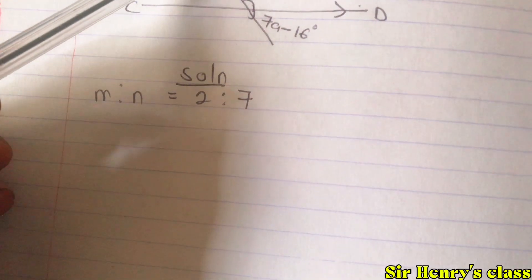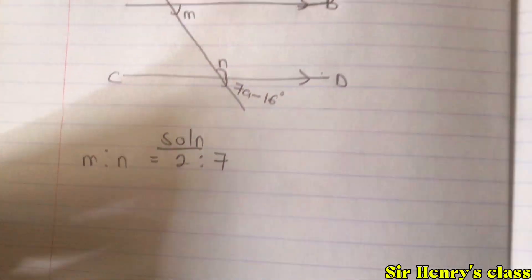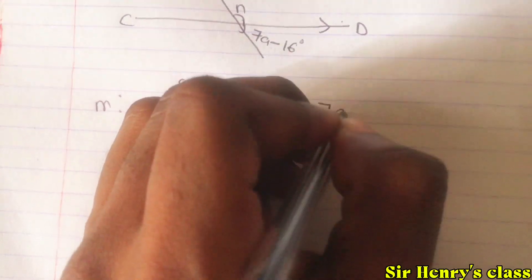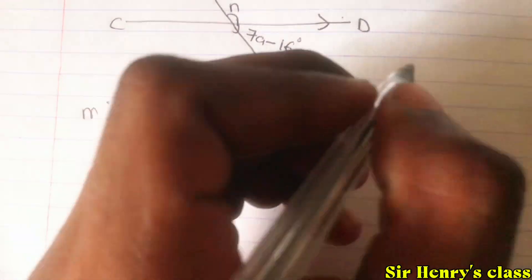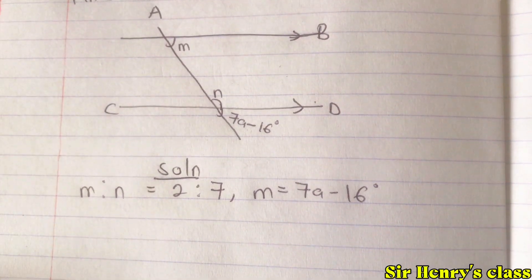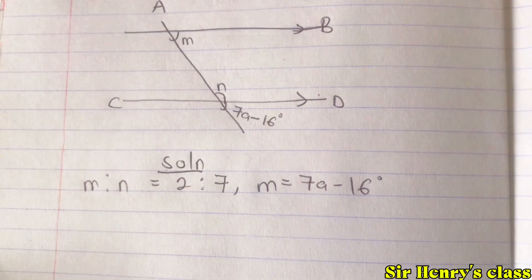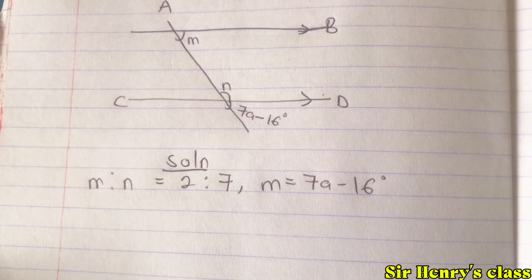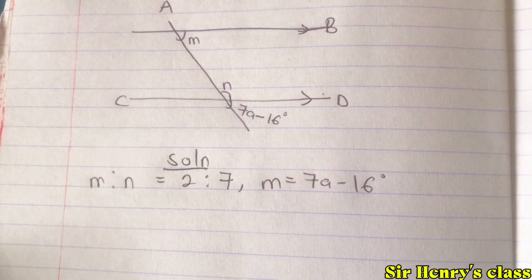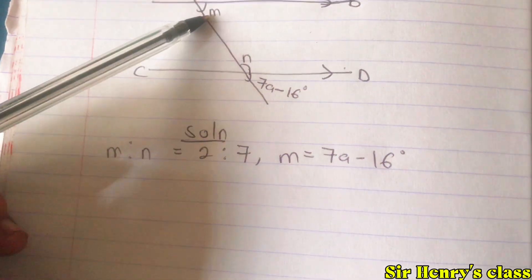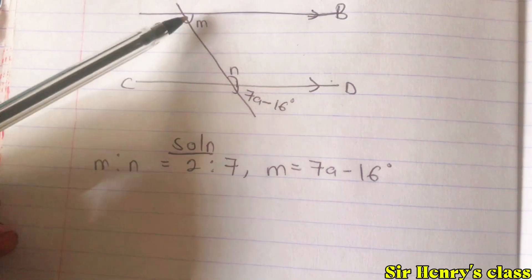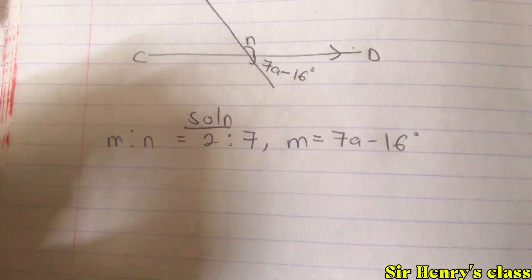Since m corresponds to 7a minus 16, we can say m is equal to 7a minus 16 degrees. Now, m is equal to 7a minus 16, and m is to n is given as 2 is to 7. We also recall from angles that we have what we call co-interior angles.